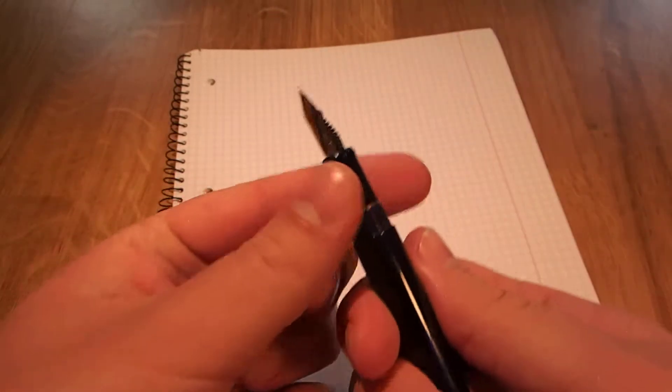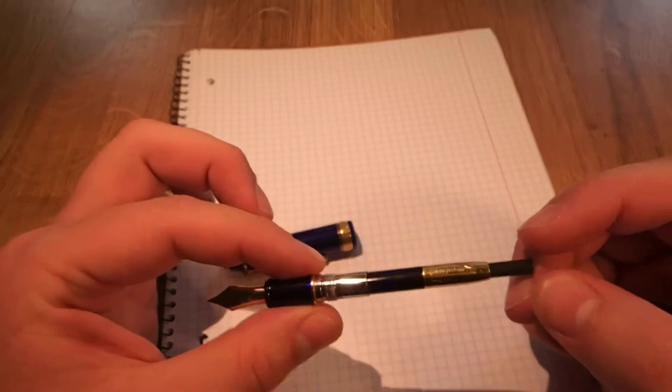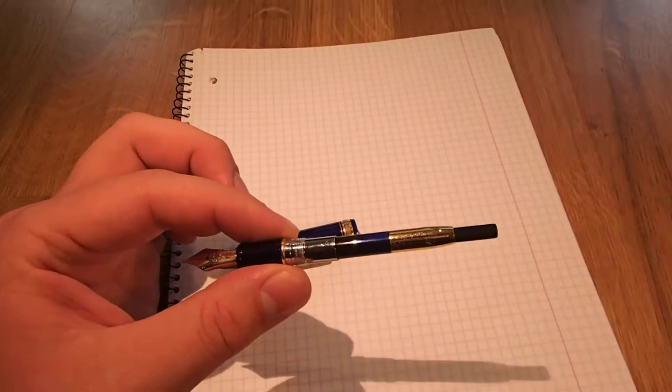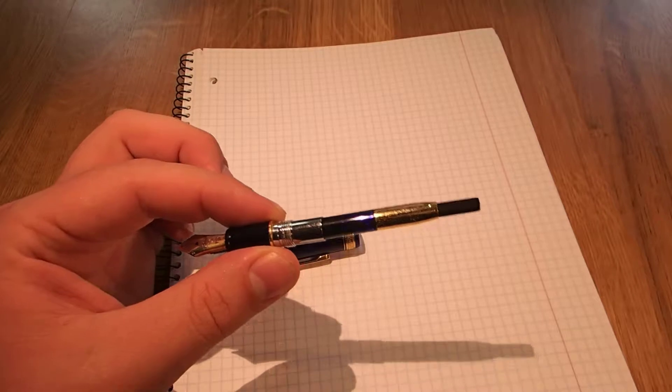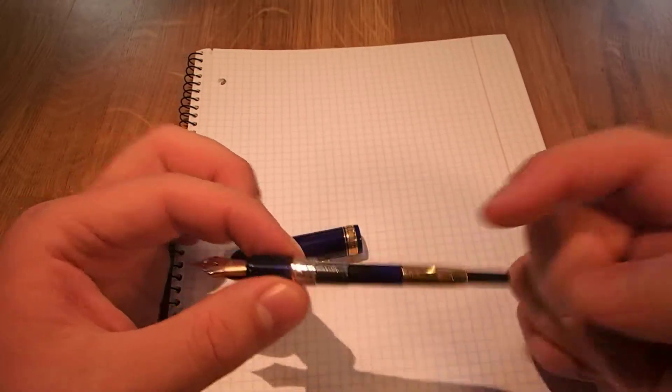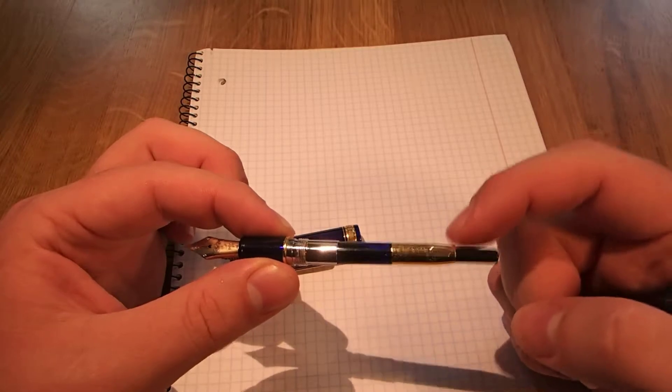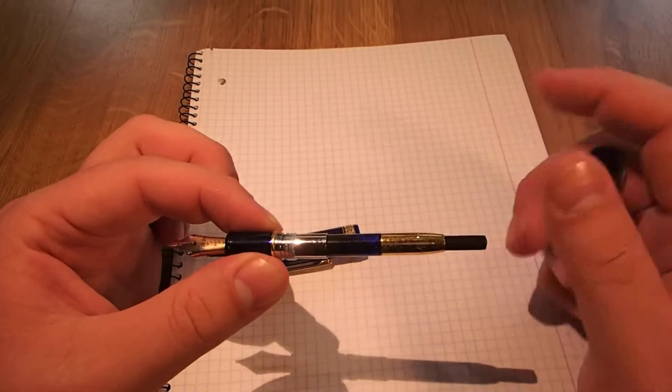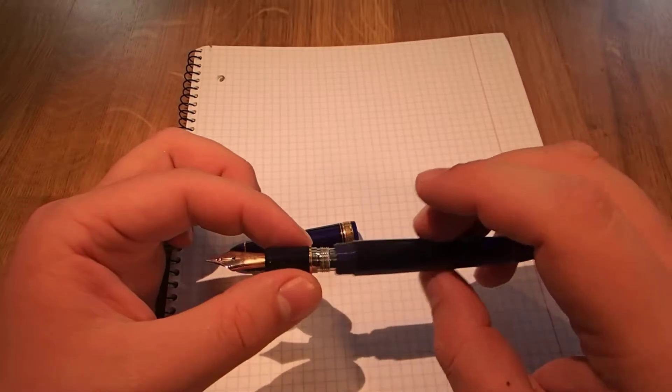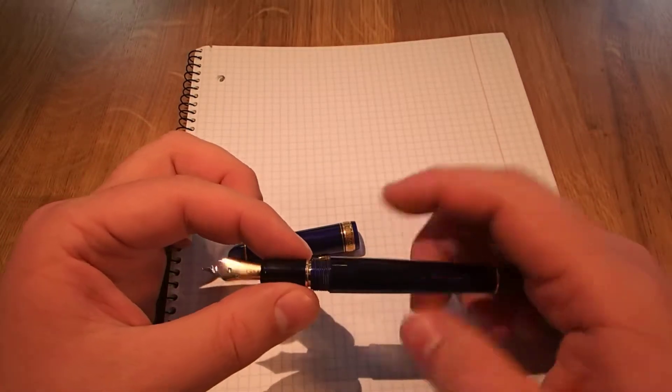The pen is cartridge converter, it doesn't come with a converter and you have to buy it separately. And the converter is I think only in gold, so if you have the silver version of this 3776 it may be a little problematic for you.